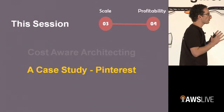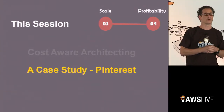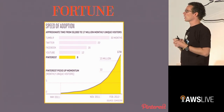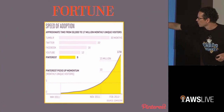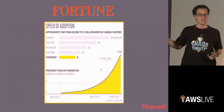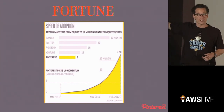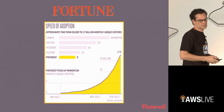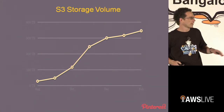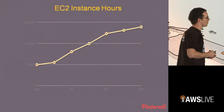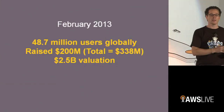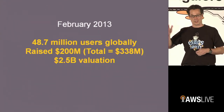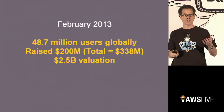We've talked about cost-aware architecting — let's wrap up with a quick case study of Pinterest. Pinterest is known to be one of the fastest growing companies in the history of the web. Looking at the time it took to go from 50,000 to 17 million users: Tumblr took 30 months, Twitter 22 months, Facebook 16 months, Pinterest only 9. That was February 2012, and with their growth they grew their S3 and EC2 instances immensely. By the time of this talk they had almost 50 million users, had just raised $200 million of venture capital, with total funding of $338 million and a valuation of $2.5 billion.